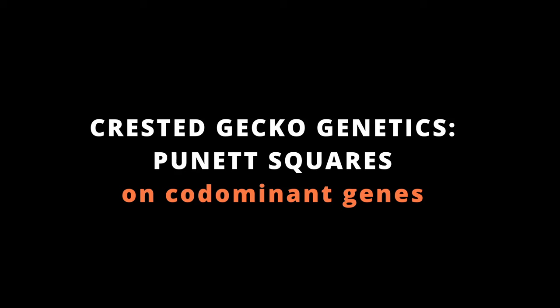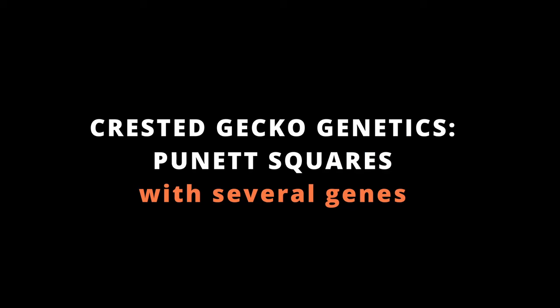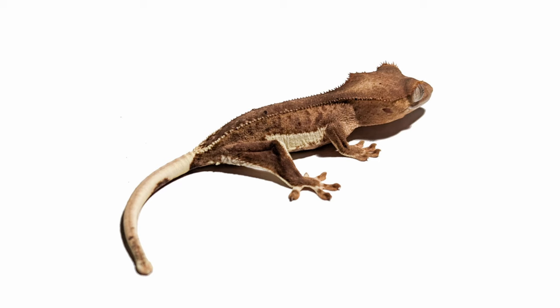I won't get deeply into co-dominance because crested geckos don't have any co-dominant traits to my knowledge, but for curiosity: if lily white were co-dominant with a hypothetical unicorn horn trait, pairing a horn lily white with a horn lily white would give one lily white, two horn lily whites, and one just horned. Co-dominance brings two genes into play simultaneously. Most crested geckos have several genes — for example, a phantom lily white with dalmatian and confetti spots involves four genes, and you can predict offspring by doing a Punnett square involving all four genes.